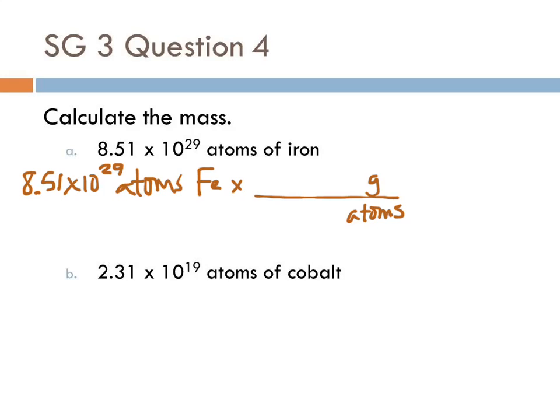So the periodic table tells us that iron is 55.85 grams. That's the mass of one mole, right?